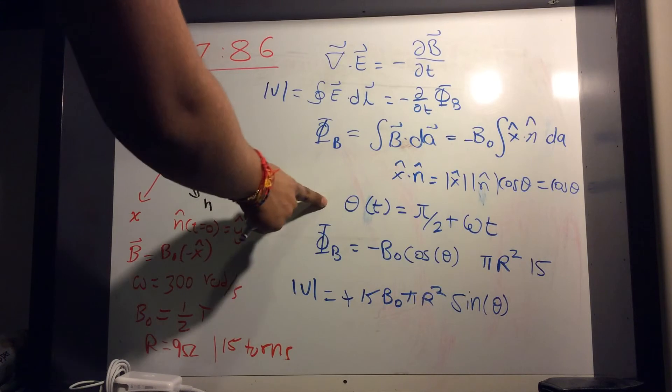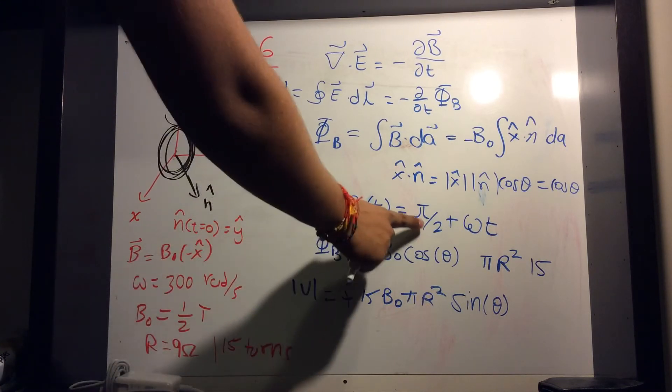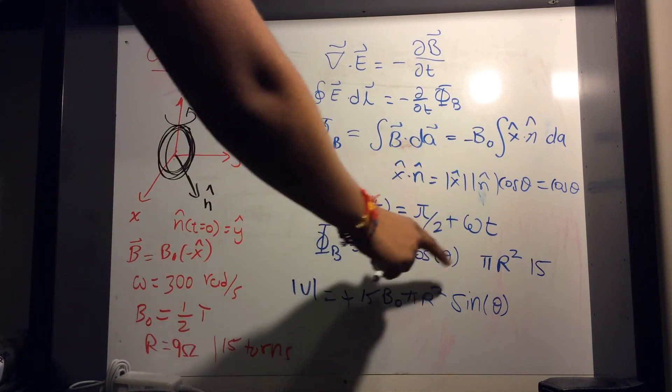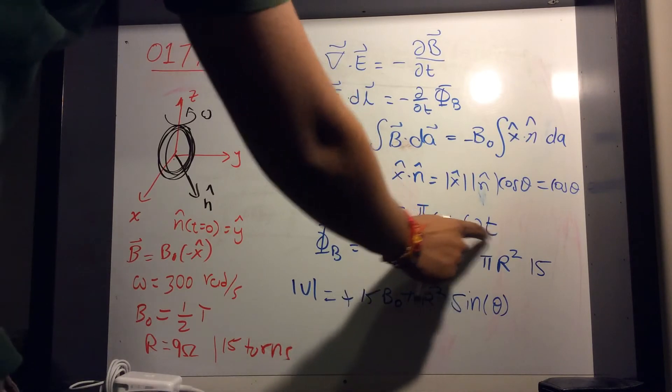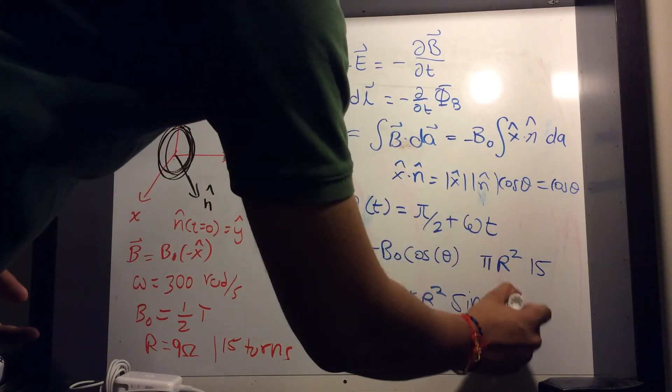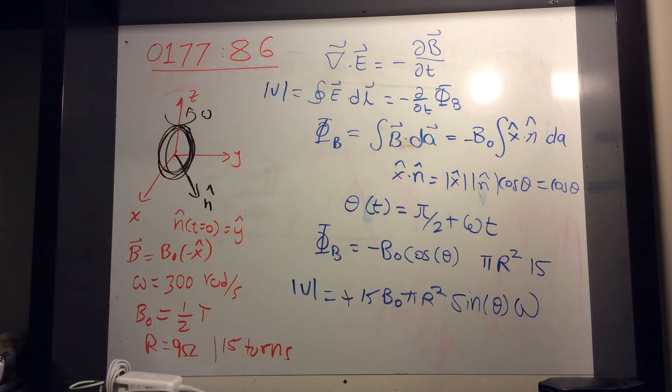And then we get derivative of inside. That was just the derivative of outside, which was derivative of cosine, times the derivative of inside, derivative of theta. Take the derivative of that. Pi over 2 is constant, so that's zero. And derivative of that is just omega. So you get omega here.